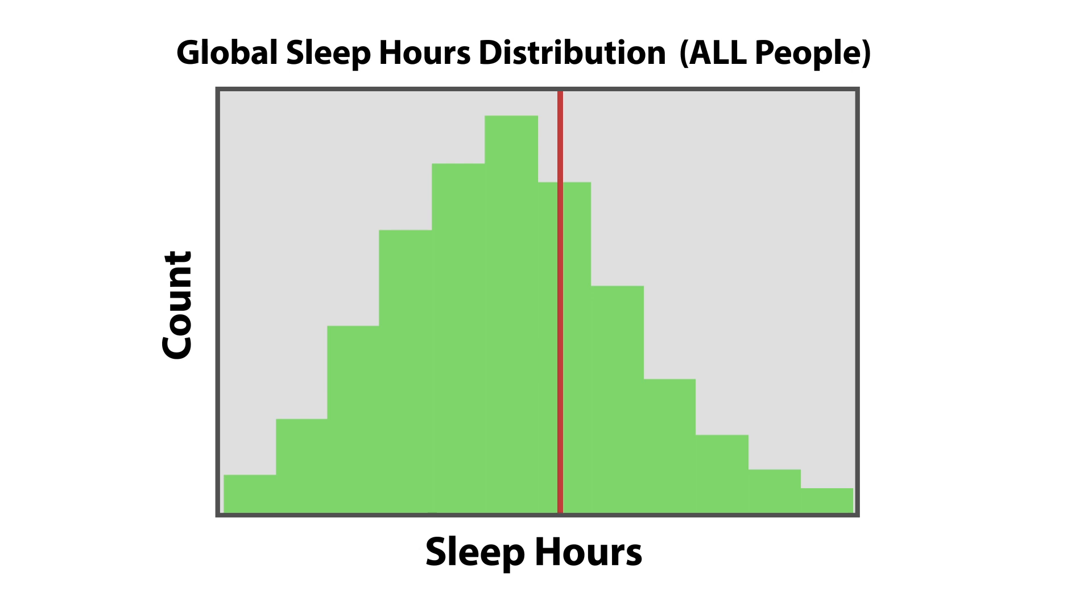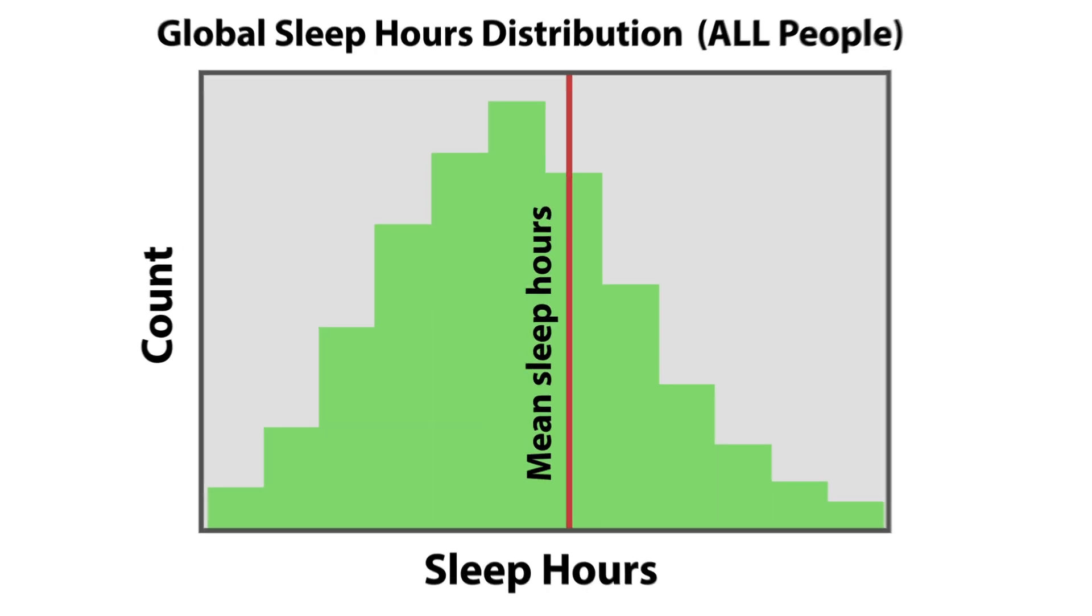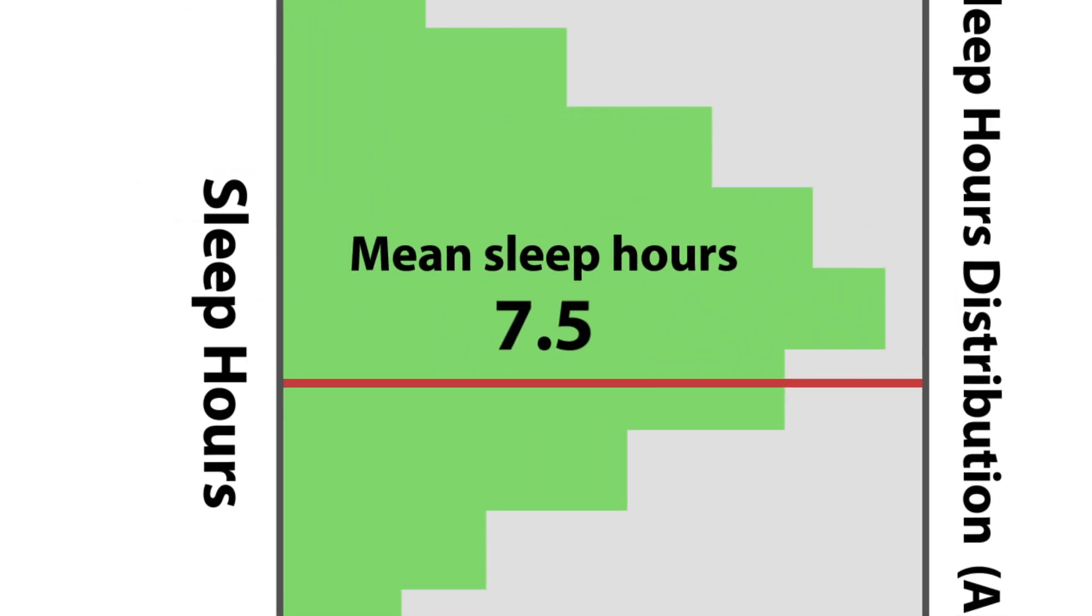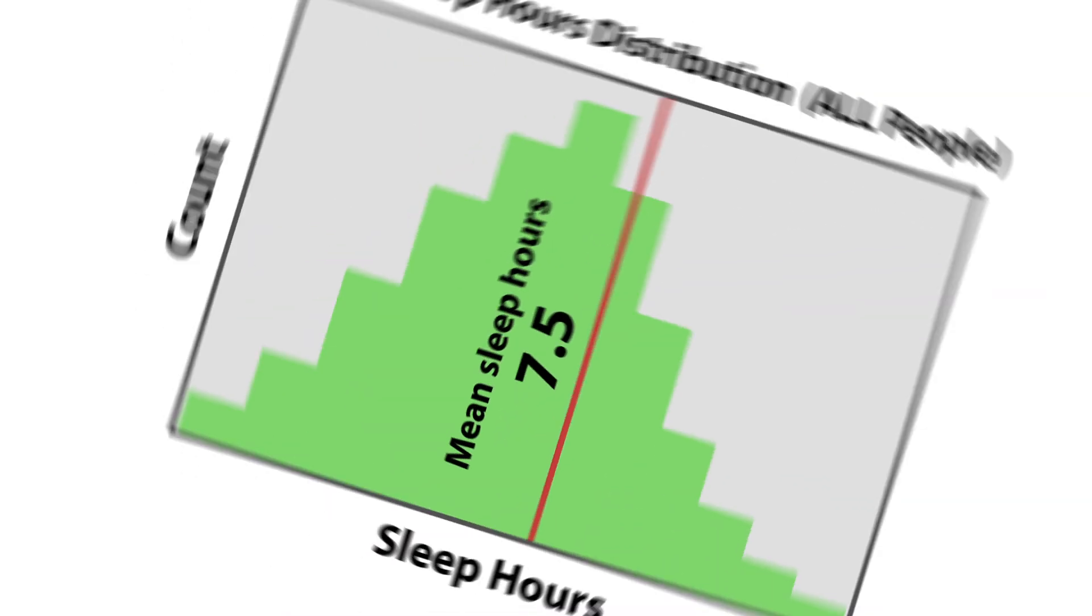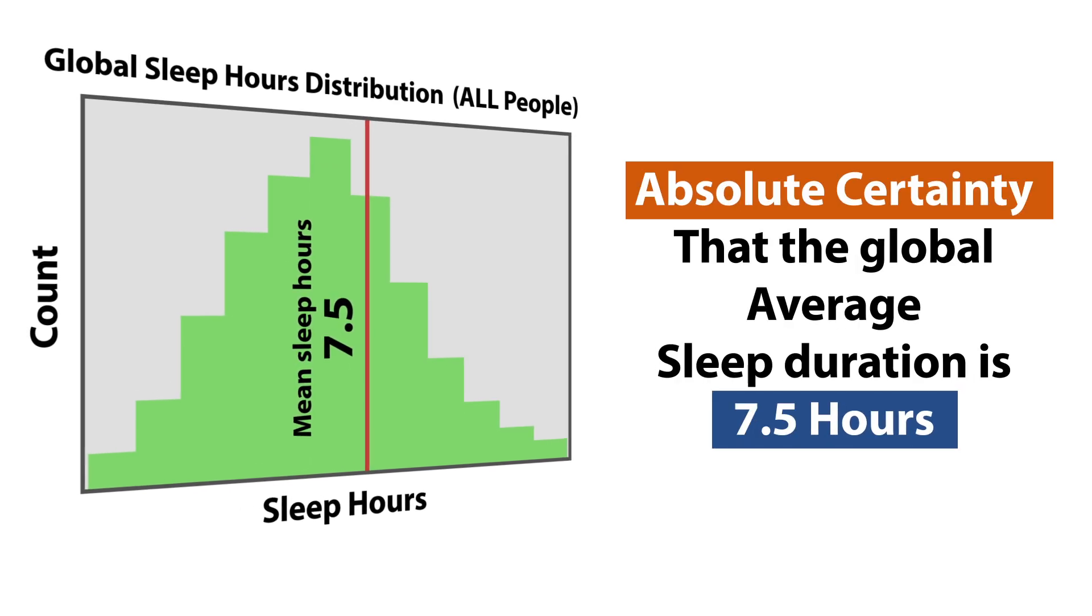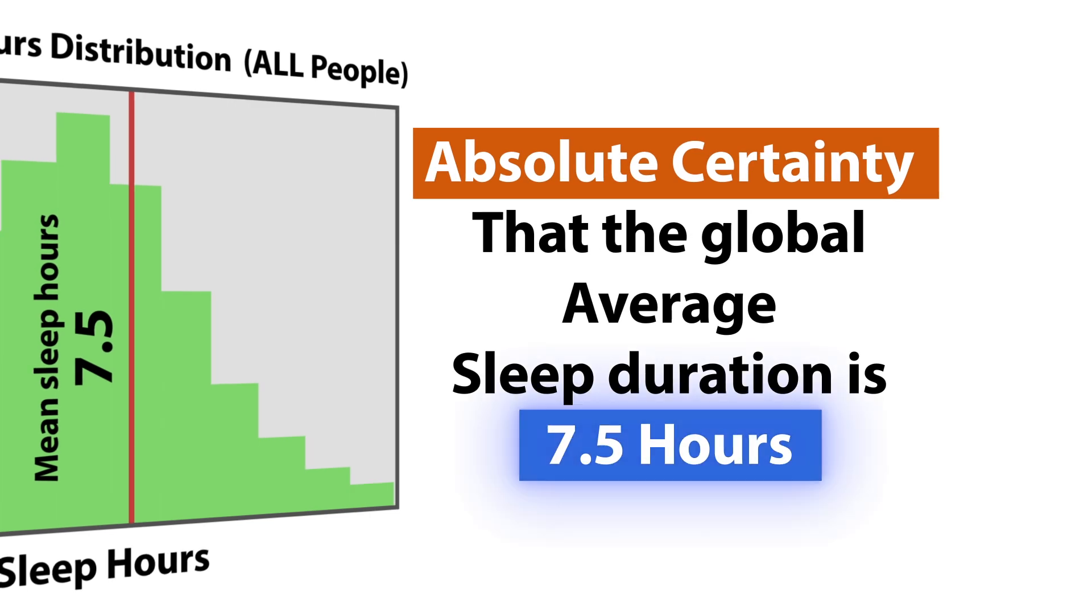From this, we could compute the population mean, the actual average sleep duration across all individuals. Suppose this value turns out to be 7.5 hours. In that case, we could state with 100% certainty that the true average sleep duration for the world's population is 7.5 hours.